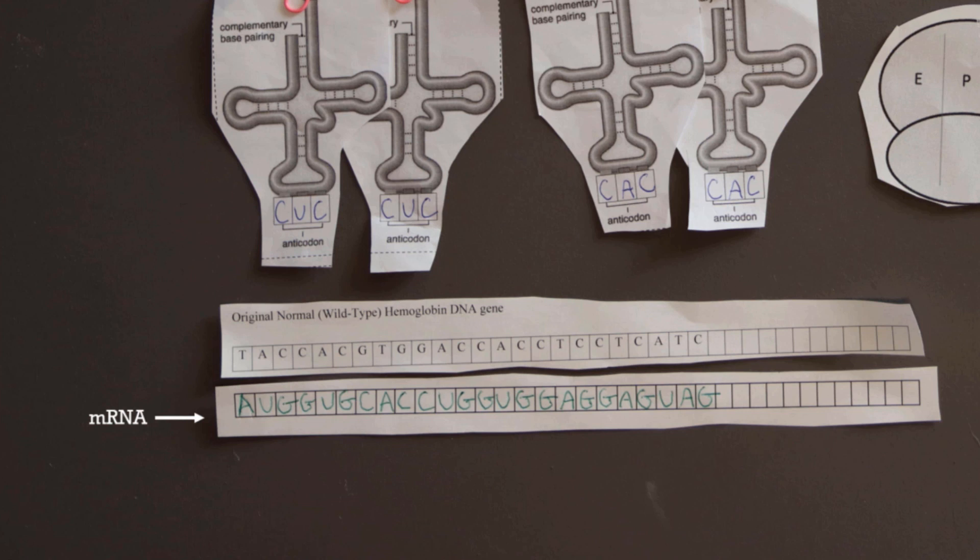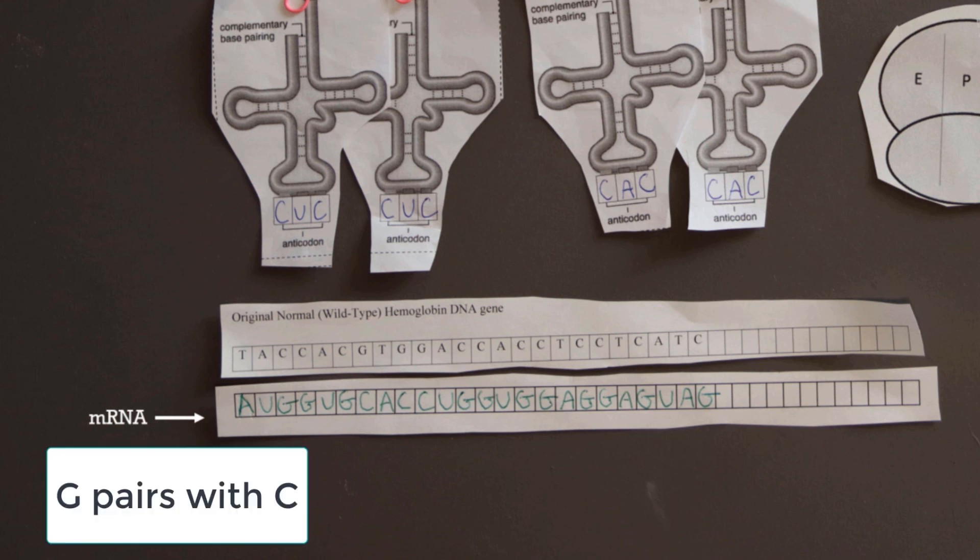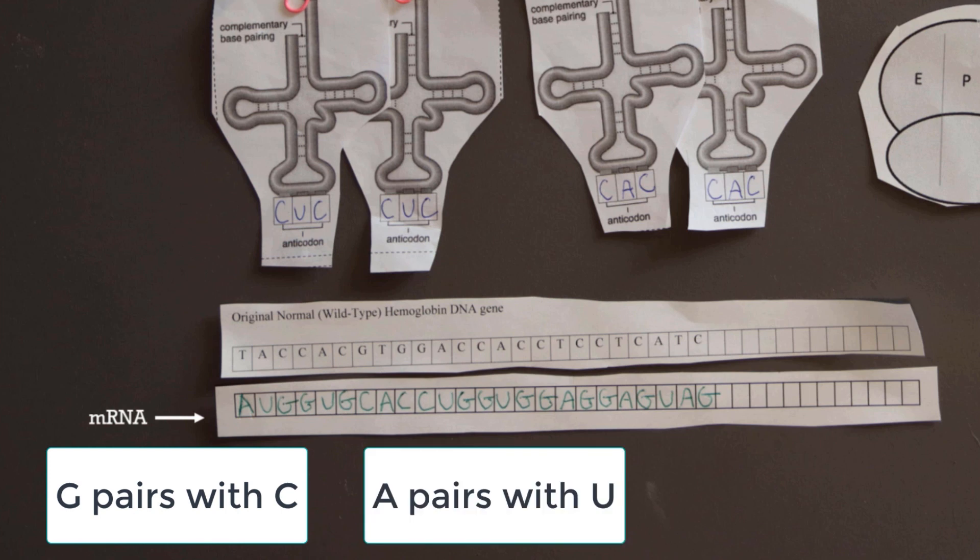Remember that you're copying DNA into RNA, so your base pair rules change a little bit. The guanine pairs with the cytosine, the G with the C, just as before, but now the A is going to pair with the U. Adenine is going to pair with uracil.